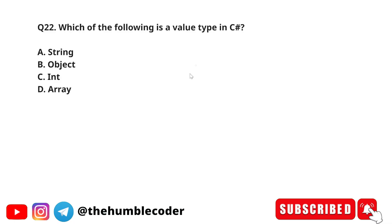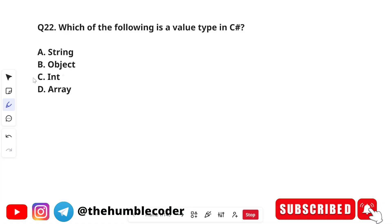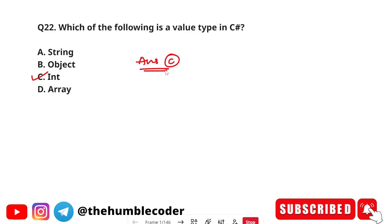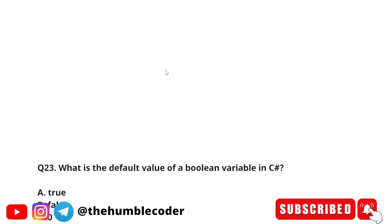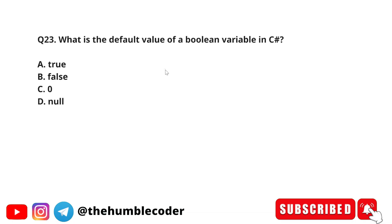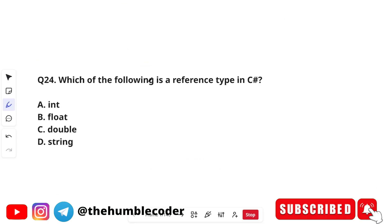Which of the following is a value type in C sharp? The options are: A) string, B) object, C) int, and D) array. The correct answer is option C — int is a value type, while string, object, and array are reference types. Next: What is the default value of a boolean variable in C sharp? Options: true, false, zero, null. The default value of a boolean variable in C sharp is false.